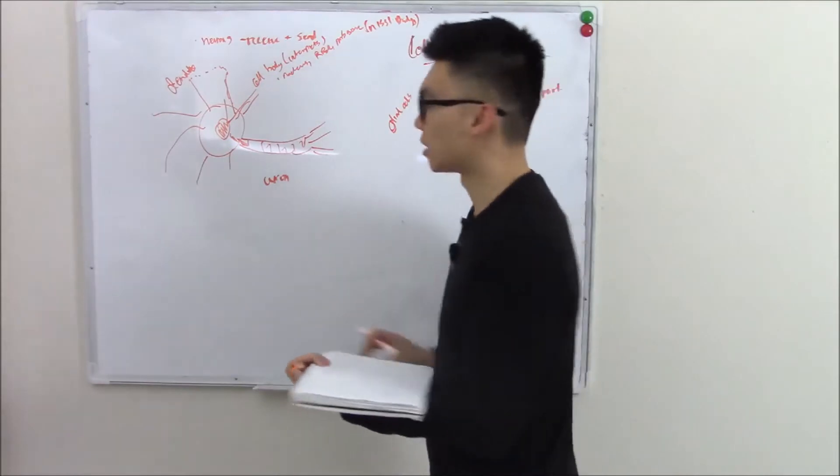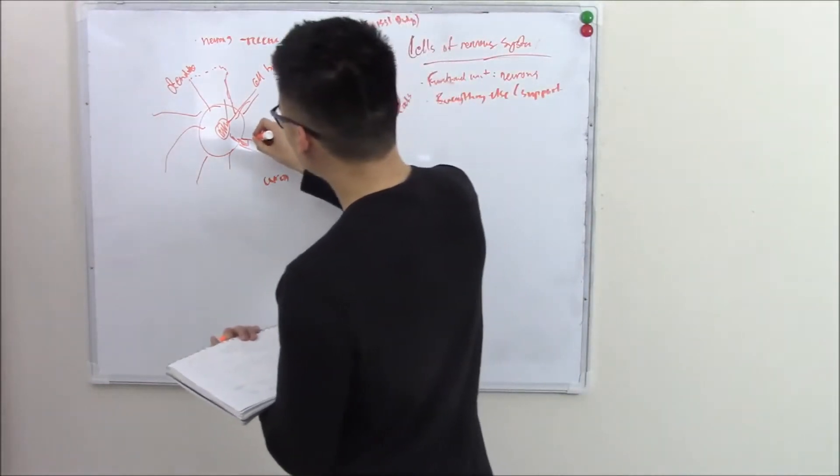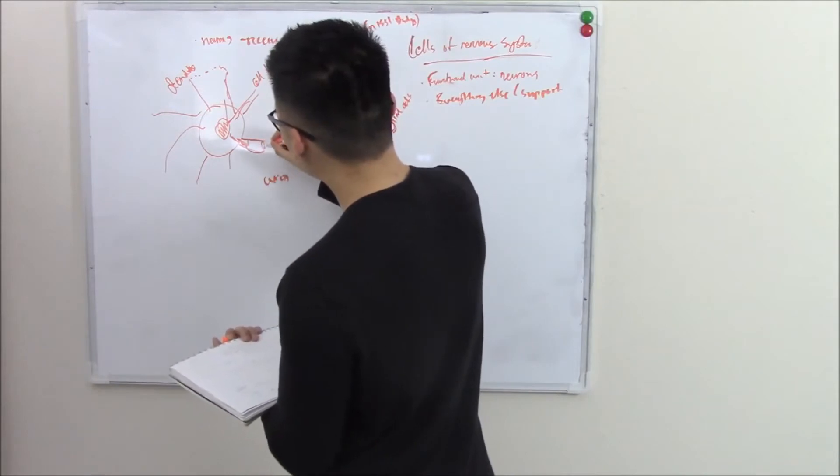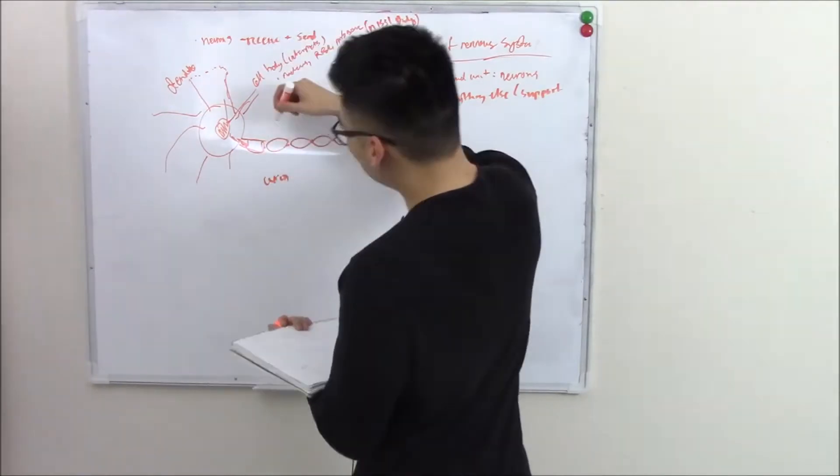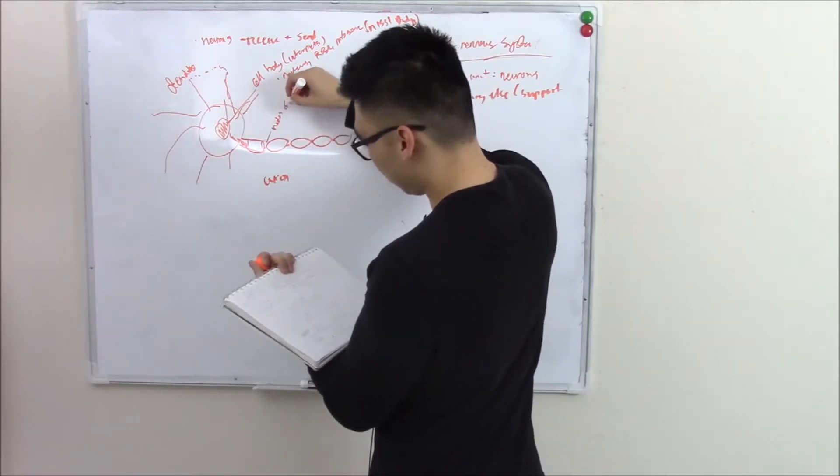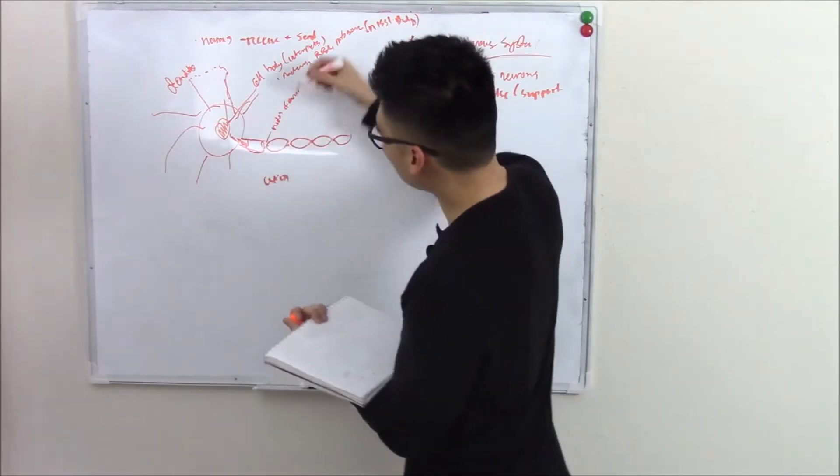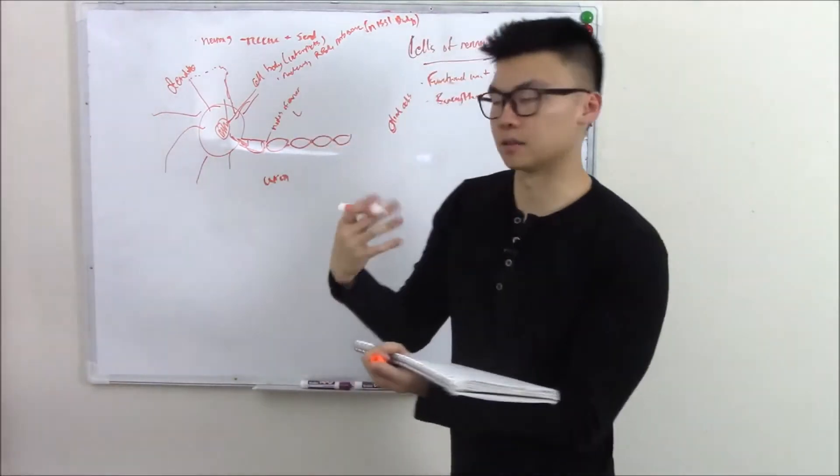Now the axon is something special. The axon is covered with this sheath called myelin, and there are little spots that aren't covered called the nodes of Ranvier. And in these little nodes you have a ton of sodium channels.